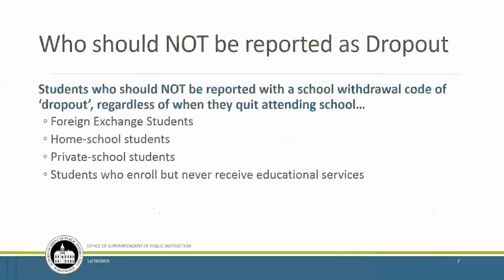Who should NOT be reported as dropouts? We have lots of questions about this every year. Students who are currently enrolled in your school should not be reported with a dropout withdrawal code. Foreign exchange students who exit and go back to their country of origin at the end of the year should not be coded as dropouts. Homeschool or private school students who enroll part-time or to attend Running Start full-time, and students who enroll but never receive educational services, should also not be reported as dropouts. Foreign exchange students get a transfer out-of-state code; home and private school students get a T2 transfer back to home or private school.